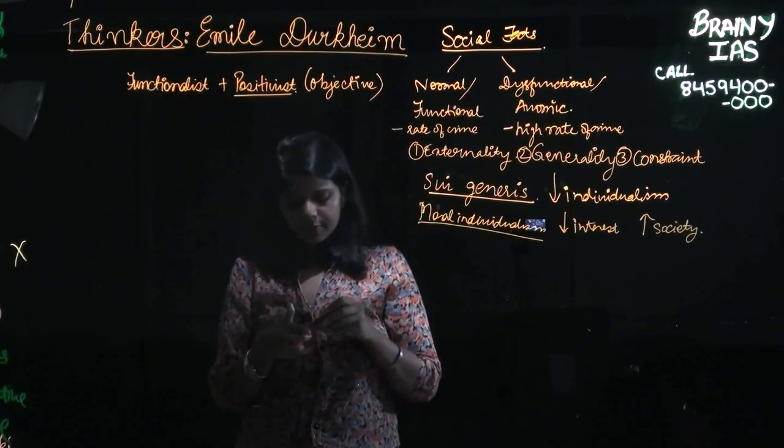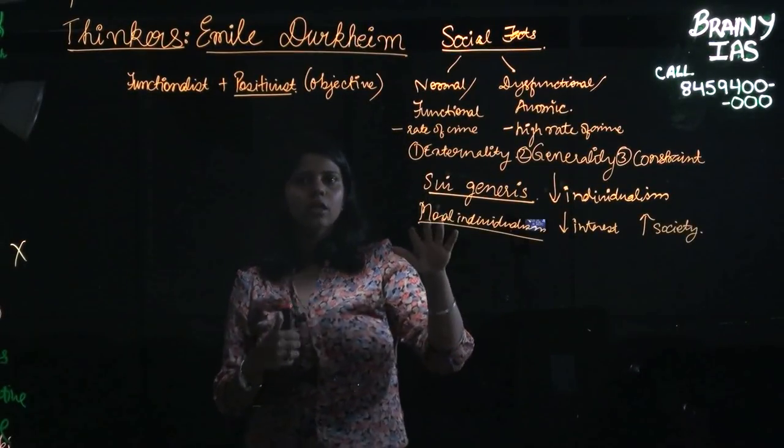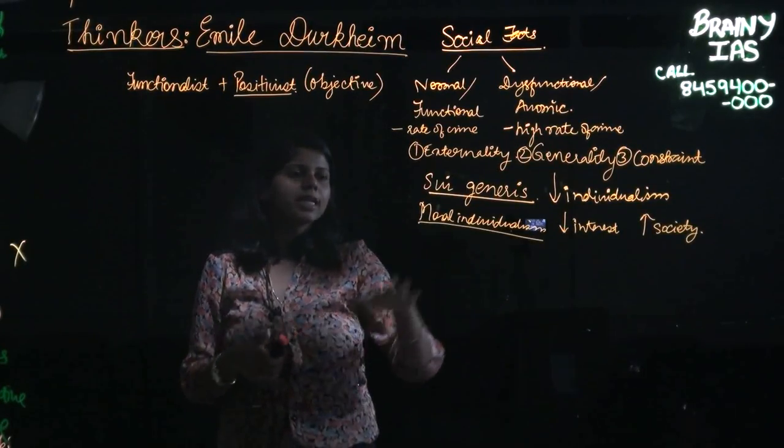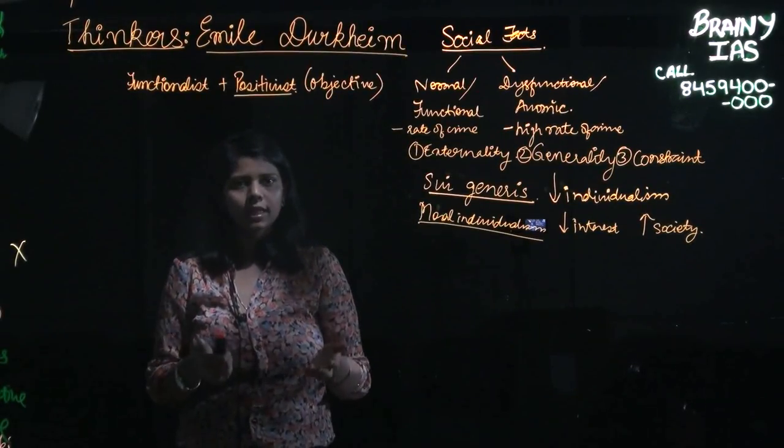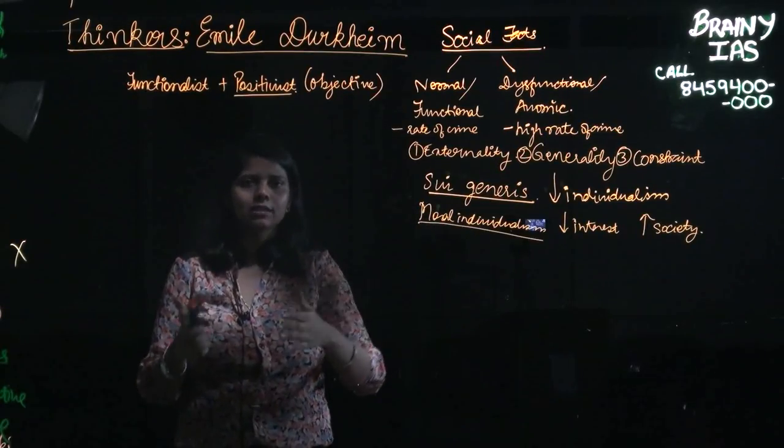Moral individualism is also seen as one of the propounded theories of Durkheim through which he tried to say that when there is anomaly in the society, when there is deviation in the society, you can actually resort to moral individualism and bring things back on track.